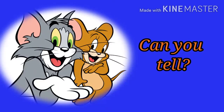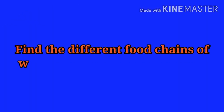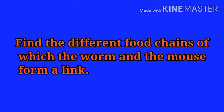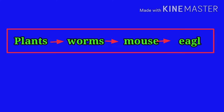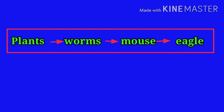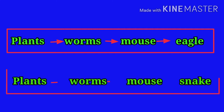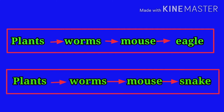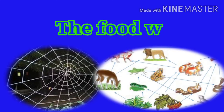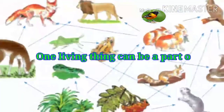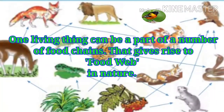Can you find the different food chains of which the worm and the mouse form a link? Here are the food chains: Plants are food for worms, worms are food for mouse, mouse is food for eagle. The second one: plants are food for worms, worms are food for mouse, mouse is food for snake.